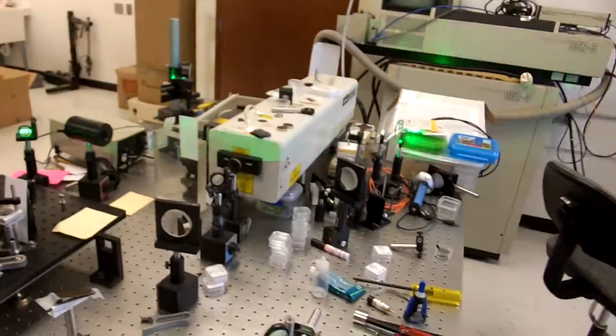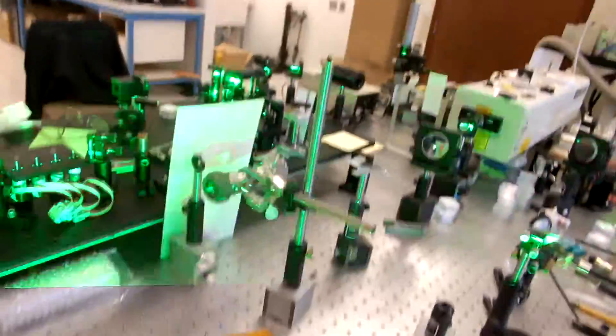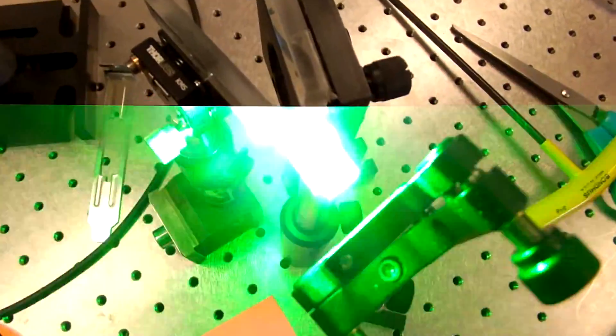So, I turned off the seeder on the pump laser, which is running at normal energies, would be equivalent of around 600 millijoules for you.